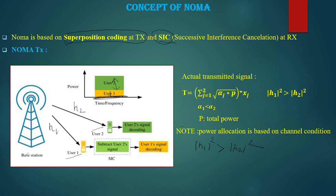At the transmitter, it generates only one signal. The transmitted signal t is the superposition signal of user 1 and user 2, and this signal t will be transmitted from the base station. The same signal will be received at both user 1 and user 2 ends. I will now show you how we generate this t using superposition coding.